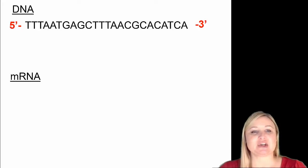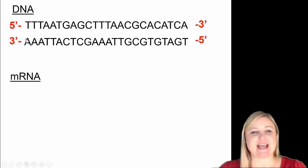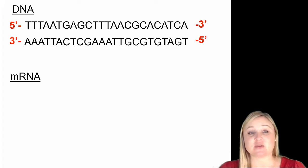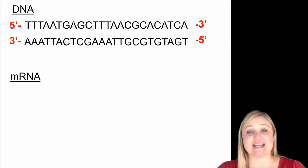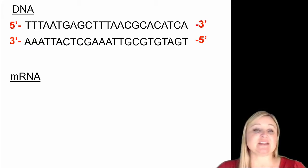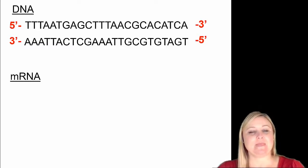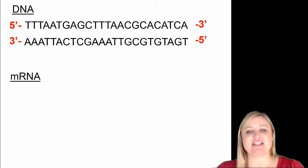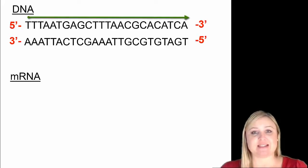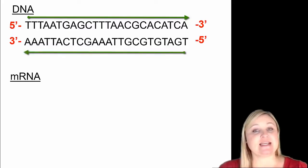Let's check and see if what you wrote is correct. When there's a T in DNA, we know it's going to be an A in the other strand. When there's a G, we know there's going to be a C, because of our complementary base pairing rules. So if our sequence of DNA goes TTT-AA-TGA-GC-TTT-AA-CGC-AC-ATCA, then the other strand is going to have A-A-A, T-T, A-C-T, C-G, A-A-A, T-T, G-C-G-T, G-T-A-G-T. And remember, because the top strand goes from left to right, the bottom strand goes from right to left, because DNA is anti-parallel.